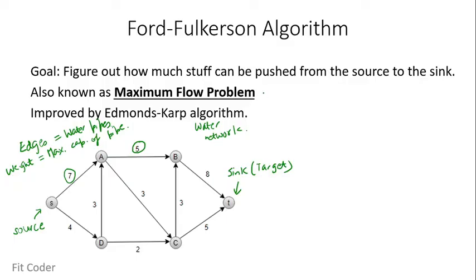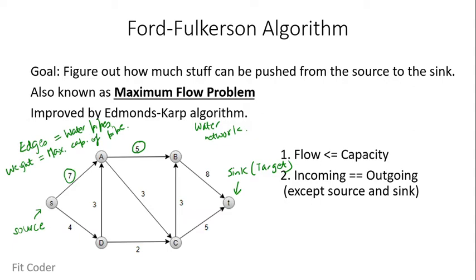The maximum flow problem has two rules. First, the flow is less than or equal to capacity — each edge has a maximum capacity equal to its weight, so we cannot send more water through a pipe than its maximum capacity. For example, the edge from D to C can carry at most 2 units. Second, incoming flow equals outgoing flow except at the source and sink — conservation principle applies. Keeping these two conditions in mind, our goal is to find the maximum amount of stuff we can move from source to target.